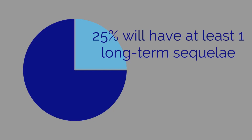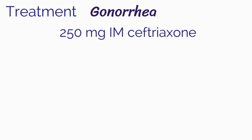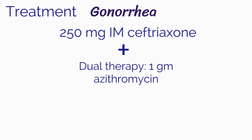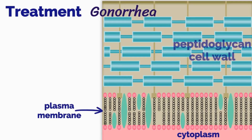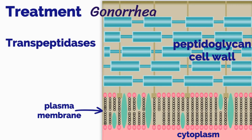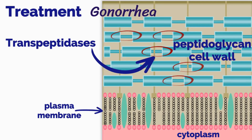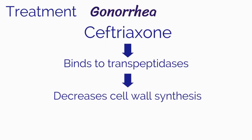Let's review treatment for the other STIs we have discussed. Gonorrhea is treated with a 250 mg intramuscular dose of ceftriaxone. Dual therapy with 1 g of azithromycin is also recommended given an increase in gonococcal resistance to cephalosporin antibiotics. Ceftriaxone binds to transpeptidases — an enzyme within the bacterial cell wall which helps cross-link peptidoglycan polymers. Ceftriaxone decreases bacterial cell wall synthesis. Damage to the bacterial cell wall then causes cell lysis.